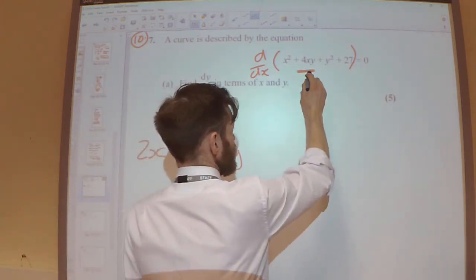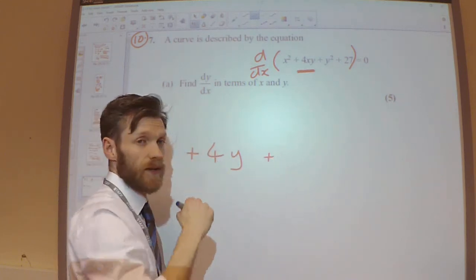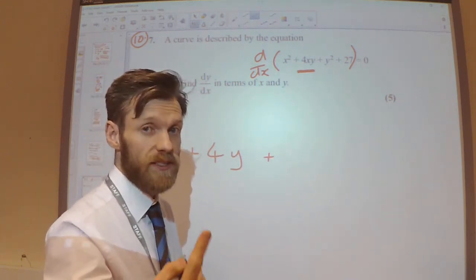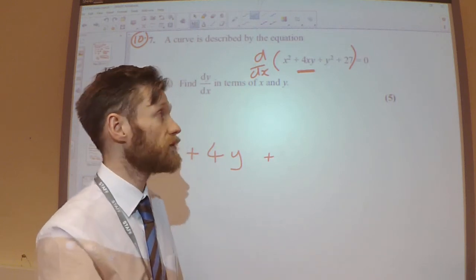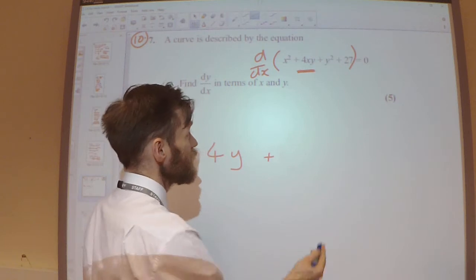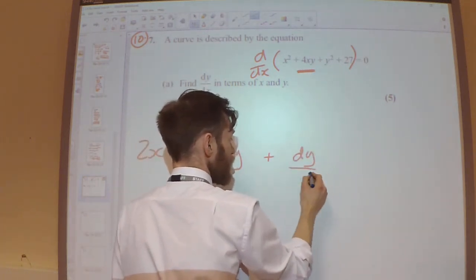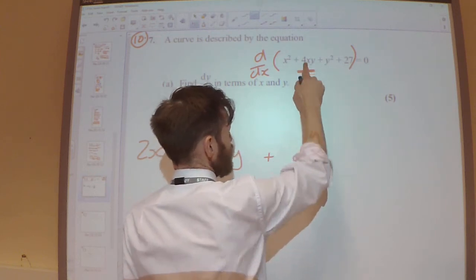Now, we need to differentiate the y and times it by the 4x. So when you differentiate y, we get dy/dx because we differentiate with respect to x, not y. So differentiating y gives dy/dx, and that's multiplied by 4x.